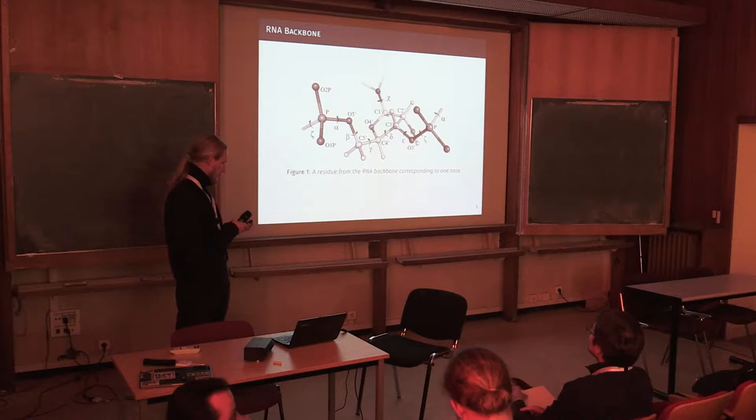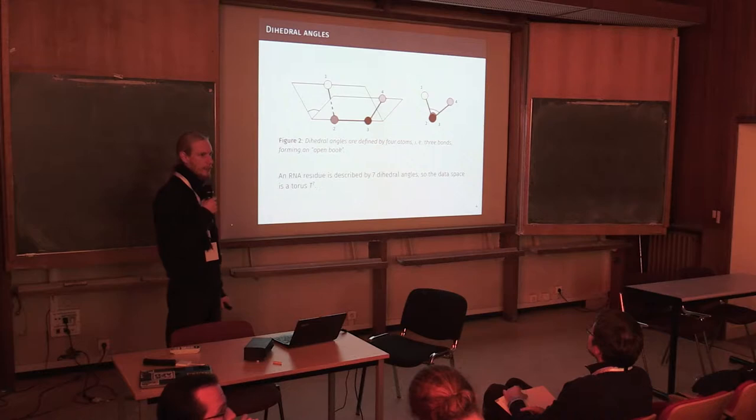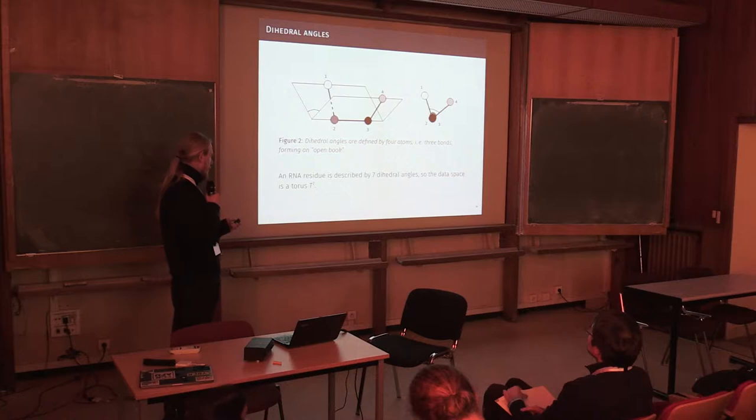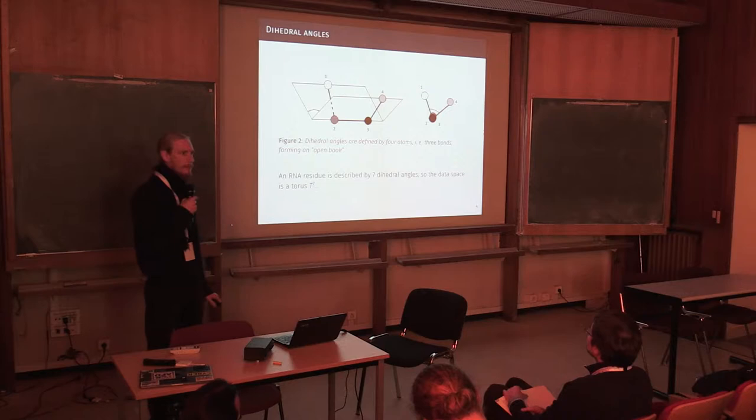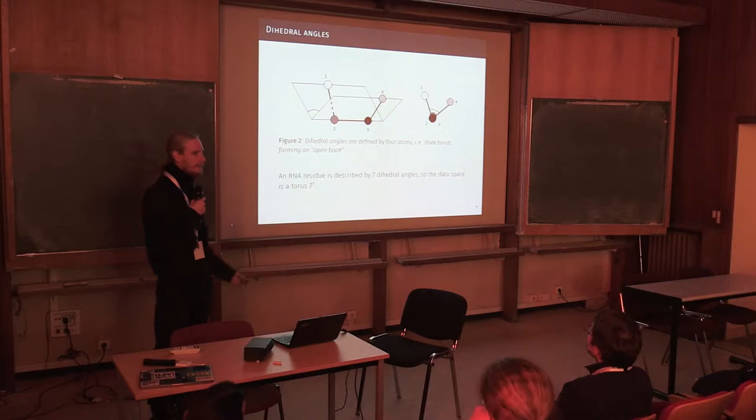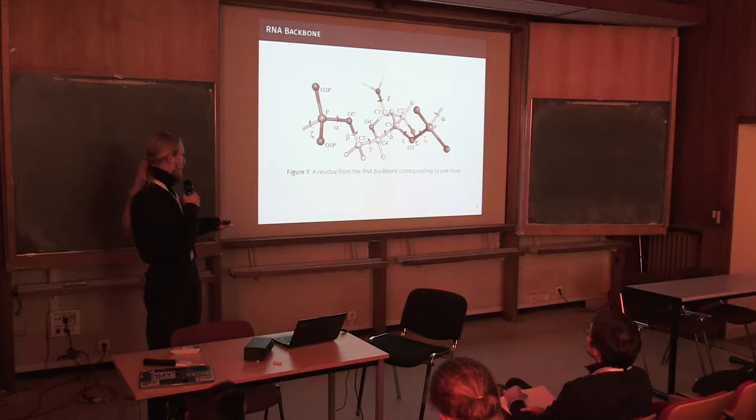Now, how is this RNA structure described geometrically? This is usually done by a dihedral angle. So four consecutive atoms of the backbone are seen as defining an open book, and the opening angle of this book is the dihedral angle. Returning to the slide before, these alpha, beta, gamma, delta, epsilon, zeta, and chi